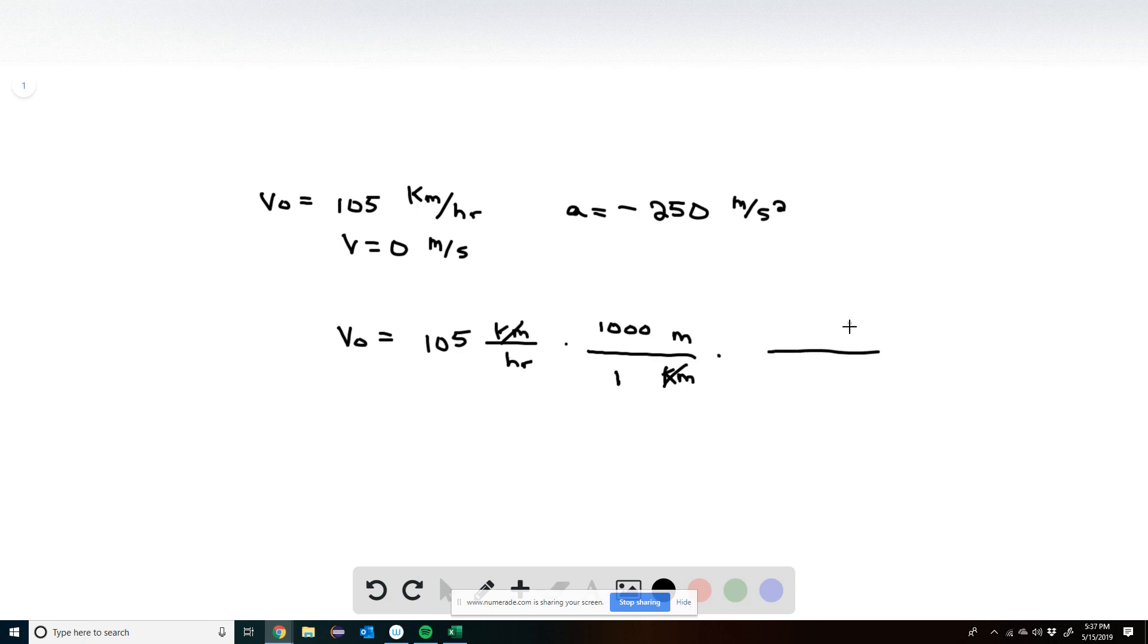I also need to convert the hours. So hours goes up here into seconds. One hour is 3,600 seconds. And then the hours cancel. The result of this is 29.2 meters per second.